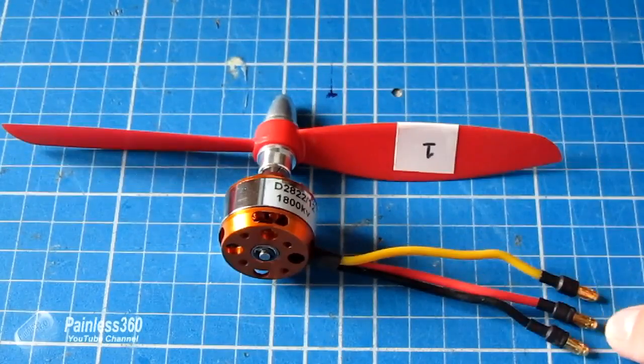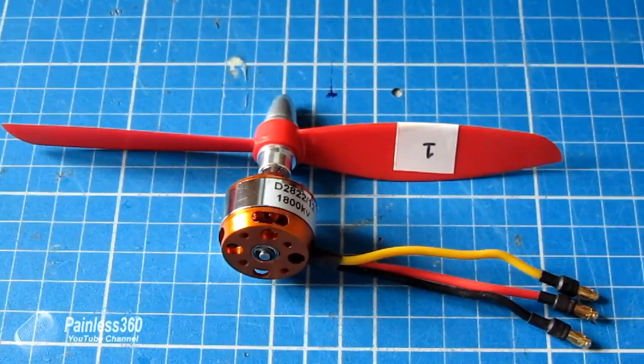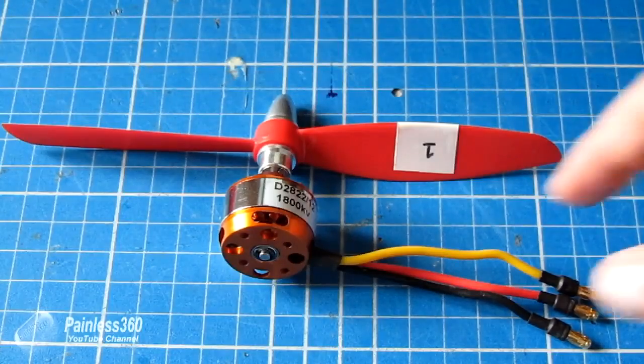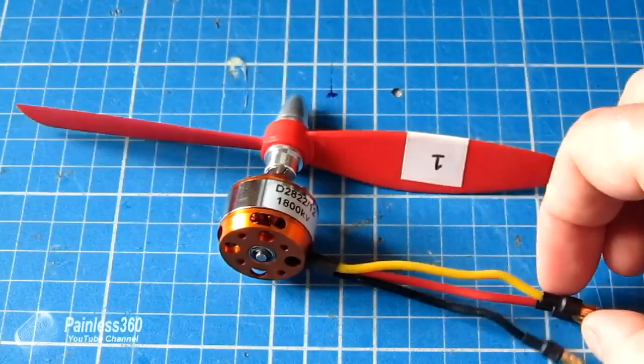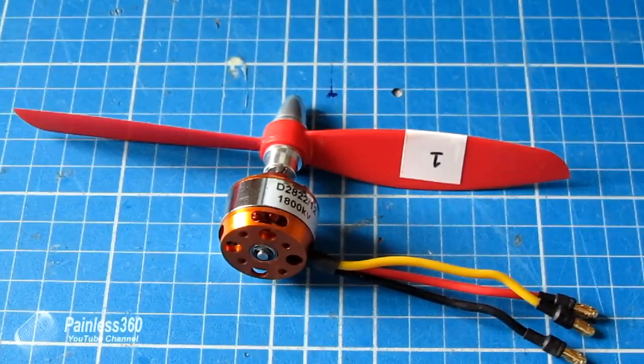If you ever connect a motor up to a speed controller using these three wires, if you find that the motor is turning the wrong way, all you have to do is swap a couple of these wires over on the connections. You can't hurt the motor, but it will reverse the direction of rotation.